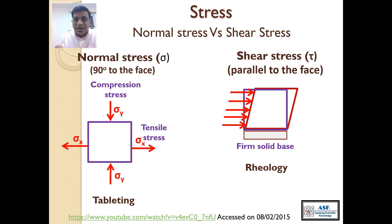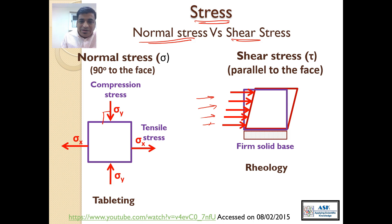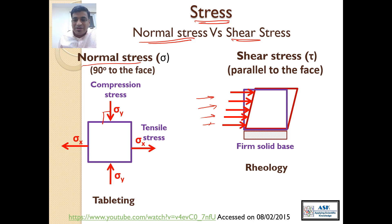There are two types of stresses: normal stress and shear stress. For normal stress, you are applying force at 90 degrees to the face. For shear stress, you are applying forces in a parallel direction. Normal stress is used in tableting, while shear stress is used in Rheology, which will be explained in the very next video, video number three of this Rheology series.